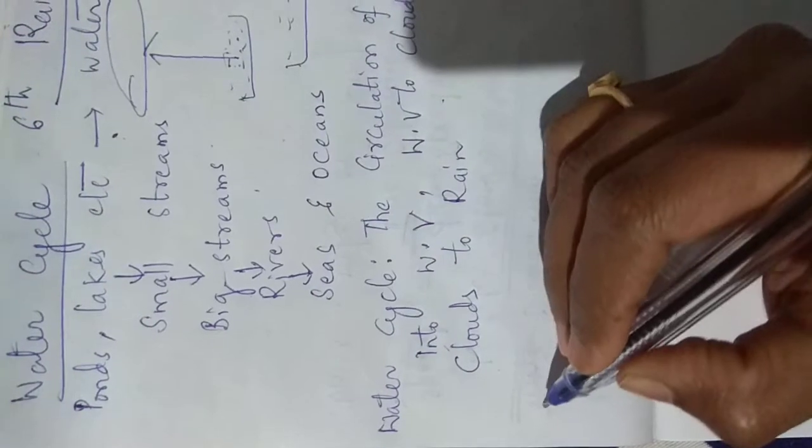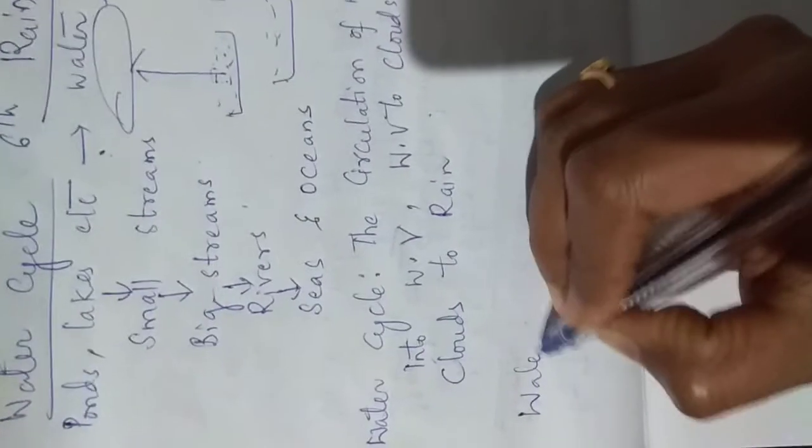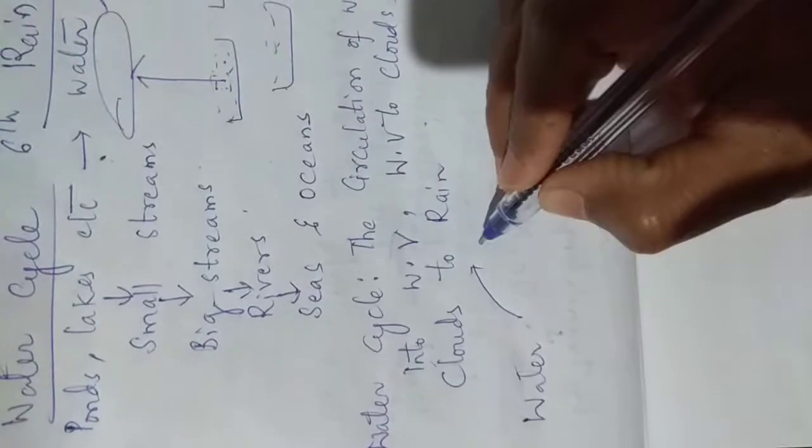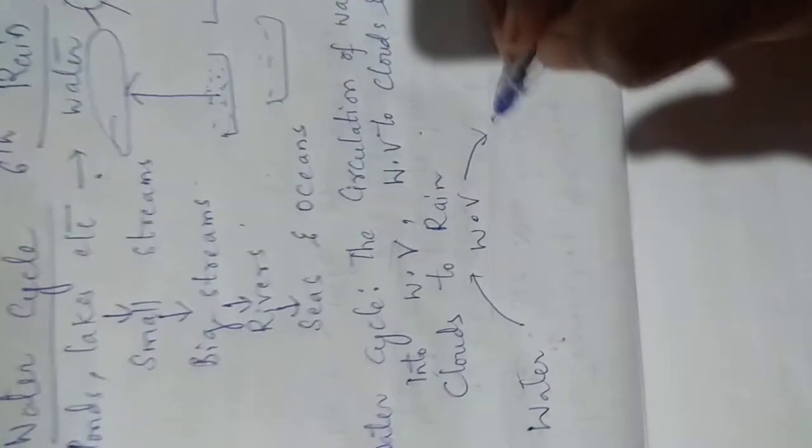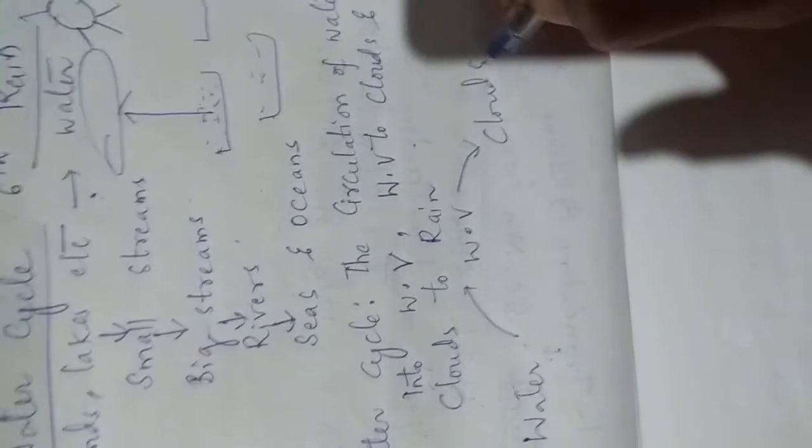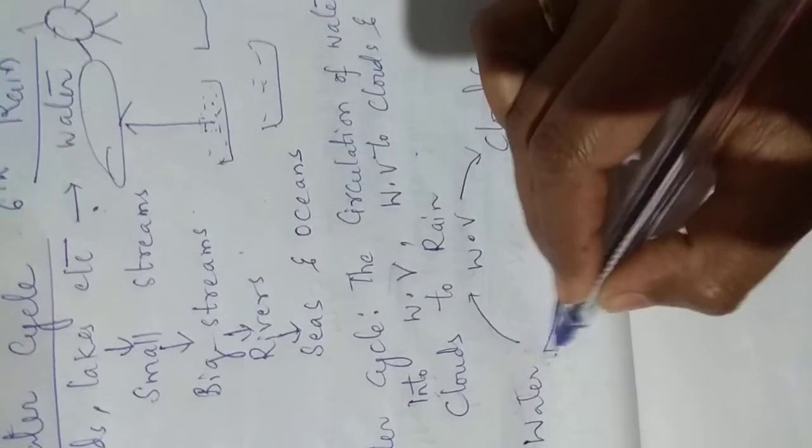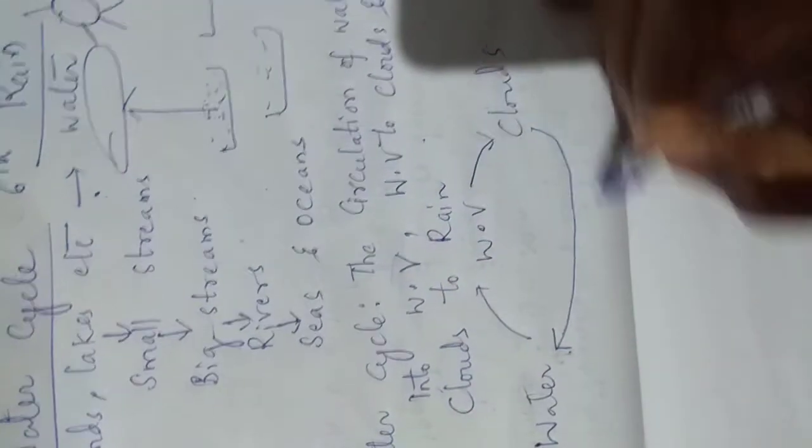What is water cycle? First, water will be there. Water will be converting into water vapour. Water vapour will be converting into clouds. And clouds se kya aate haame paani. And this will be continuous.